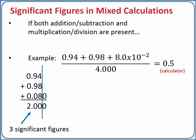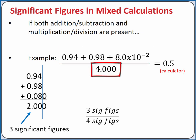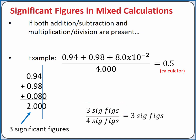Now we can consider the division. For division and multiplication, we have to look at the number of significant figures in each factor. In the numerator, we've already said we have three significant figures. In the denominator, we have four significant figures in the number 4.000. So our answer can only have as many significant figures as the factor with the fewest significant figures. Our answer needs to have three significant figures.